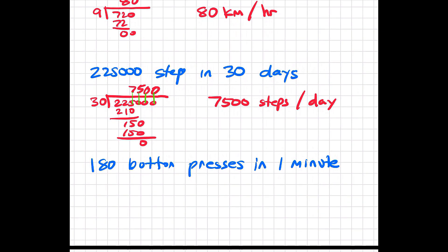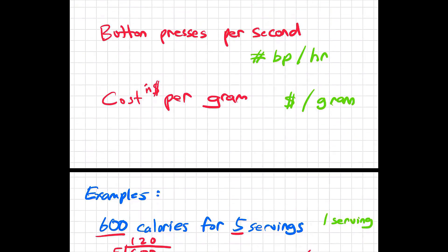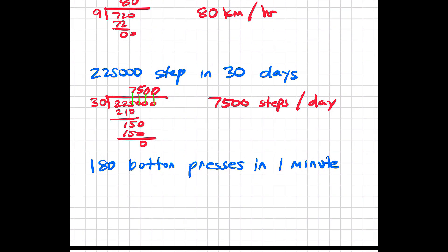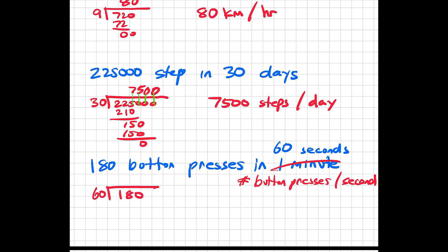This example states we have 100 button presses in one minute. But we were talking about button presses per second, so we want to put it in that form. I don't want button presses per minute — I want button presses per second. I know that one minute is equal to 60 seconds, so I'm no longer dealing with that minute. All I'm going to do is divide 60 into the 180, which goes in there three times. So my rate of button presses is three button presses per second.